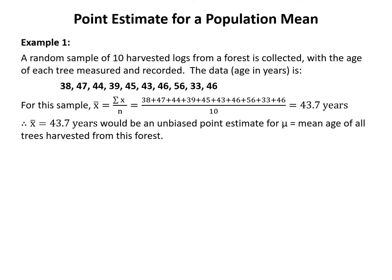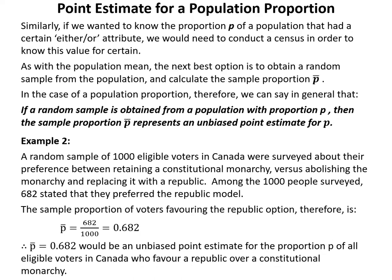In example 1, a random sample of 10 harvested logs from a forest is collected, with ages in years as follows: 38, 47, 44, 39, 45, 43, 46, 56, 33, and 46. The sample mean x-bar is calculated as the sum of all values divided by the sample size, giving x-bar = 43.7 years. Therefore x-bar = 43.7 years is an unbiased point estimate for mu, the mean age of all trees harvested from this forest.